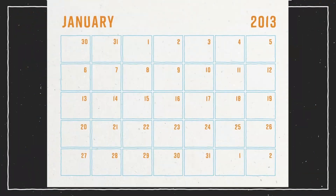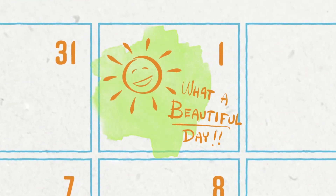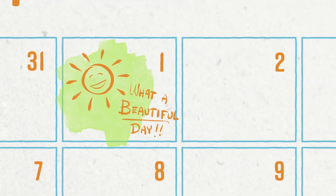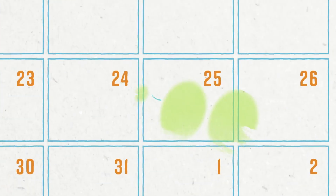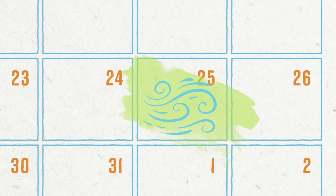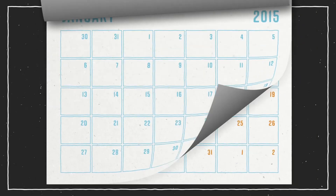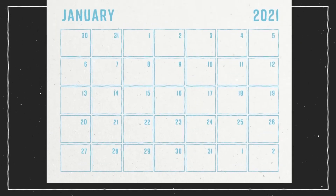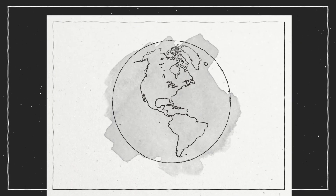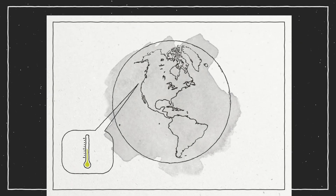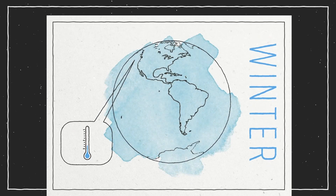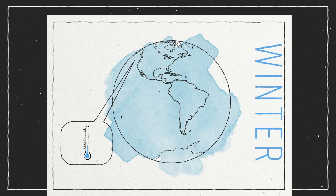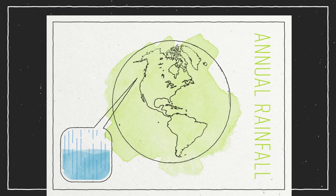Climate is different than weather, which is what it's like on just one particular day. Climate is determined by the temperature, the amount of rain or snow, and even how much wind an area has over a long time. Because you live in a particular climate, you know about how warm it will be in the summer, about how cold it will be in the winter, and even about how much rain you'll get in a year.